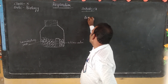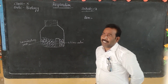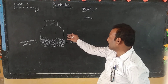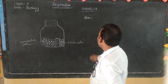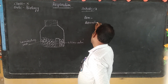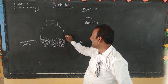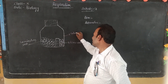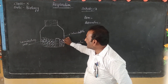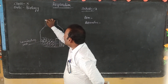Activity one. First, the aim: To demonstrate that carbon dioxide is released during the process of respiration. Next are the apparatus or required materials: wide-mouthed glass bottle, germinating seeds, lime water, and a rubber strap or rubber cork.